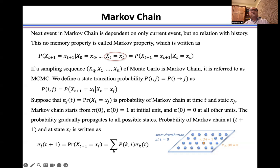If a sampling sequence (X0, X1,..., Xn) of Monte Carlo is a Markov Chain, it's referred to as MCMC. We define a state transition probability P(i,j) = P(t → j) as P(i,j) = P(Xt+1 = xj | Xt = xi). Suppose πj(t) = Pr(Xt = xj) is probability of Markov chain at time t and state xj.